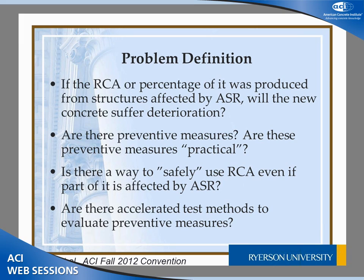Basically, if RCA is coming from ASR-affected concrete, will the new concrete suffer deterioration? The answer could be yes — because it's an active aggregate placed in new concrete with a new source of alkalis. But the other side could argue that after 15–20 years of service, the reactive silica in the old concrete may already be consumed, and even the gel could have been oxidized or carbonated. So we need to find out: if we take this aggregate and put it in new concrete, will we get expansion or not? And if it does expand, are there practical preventive measures that don't negatively affect other concrete properties?